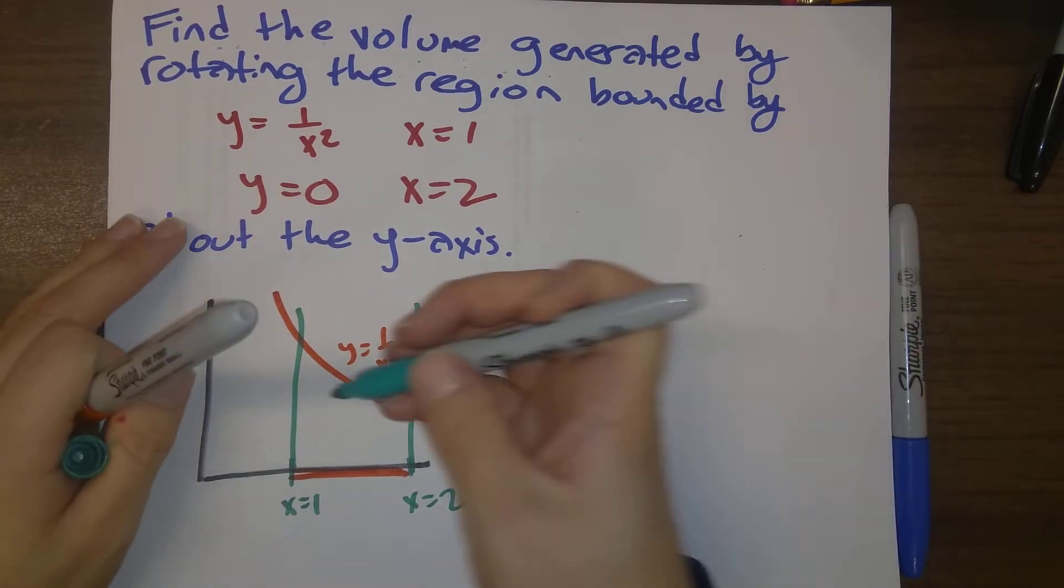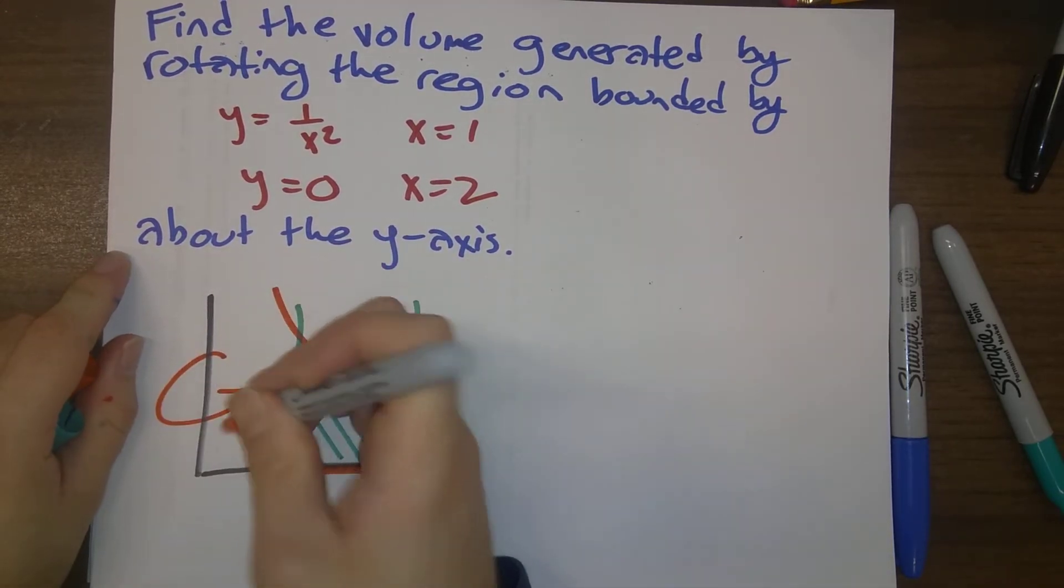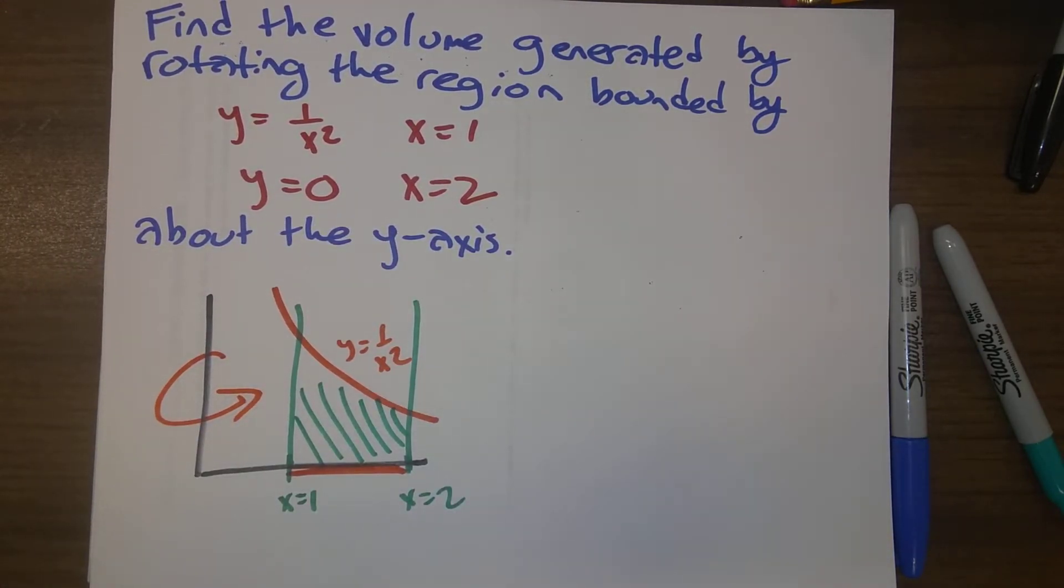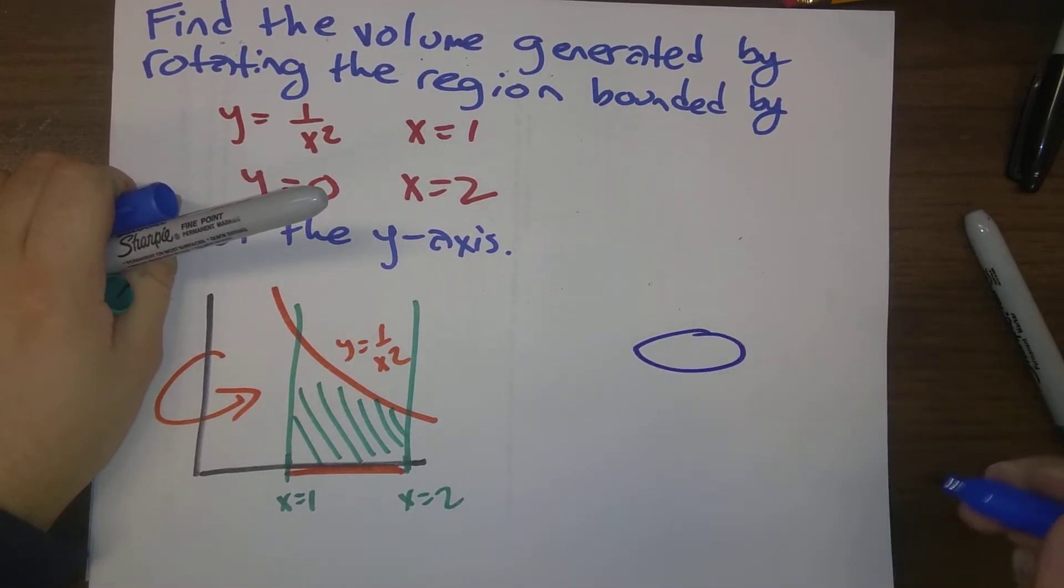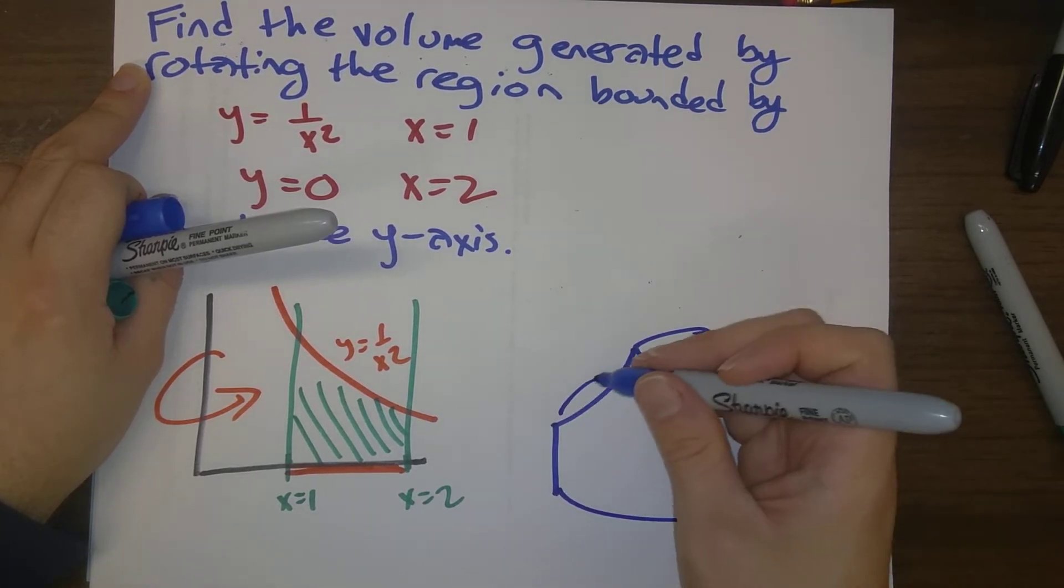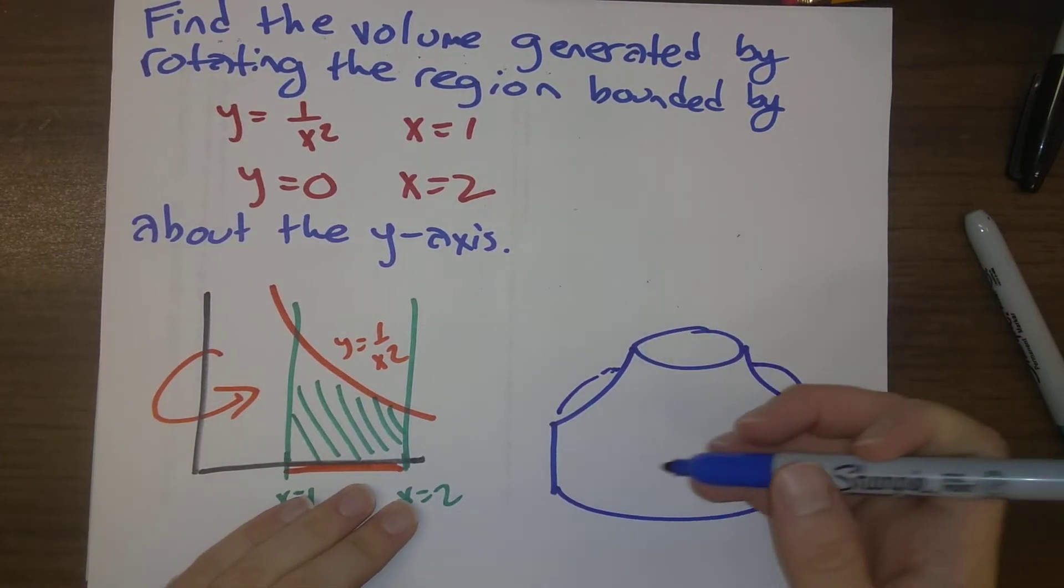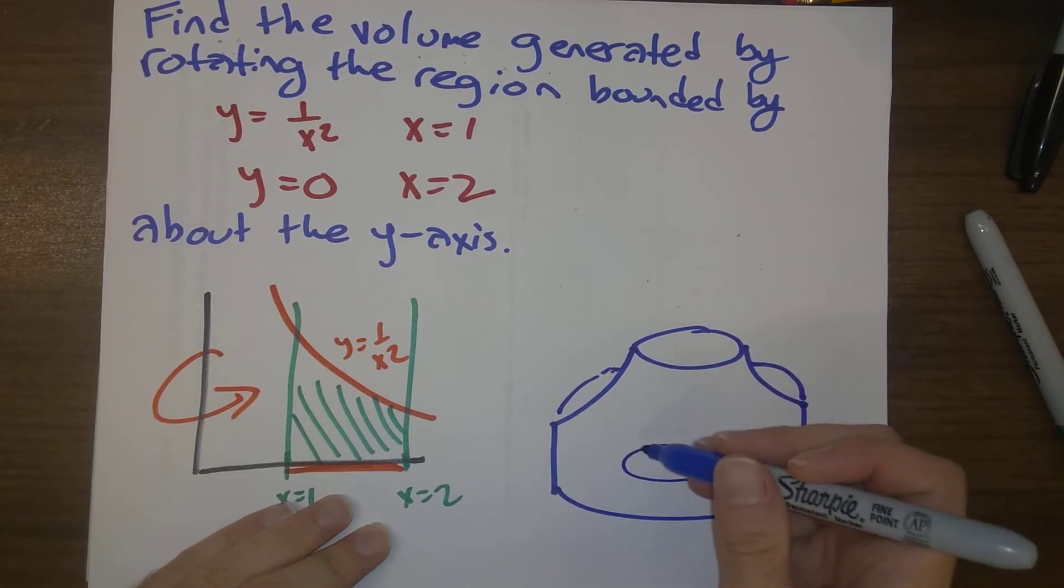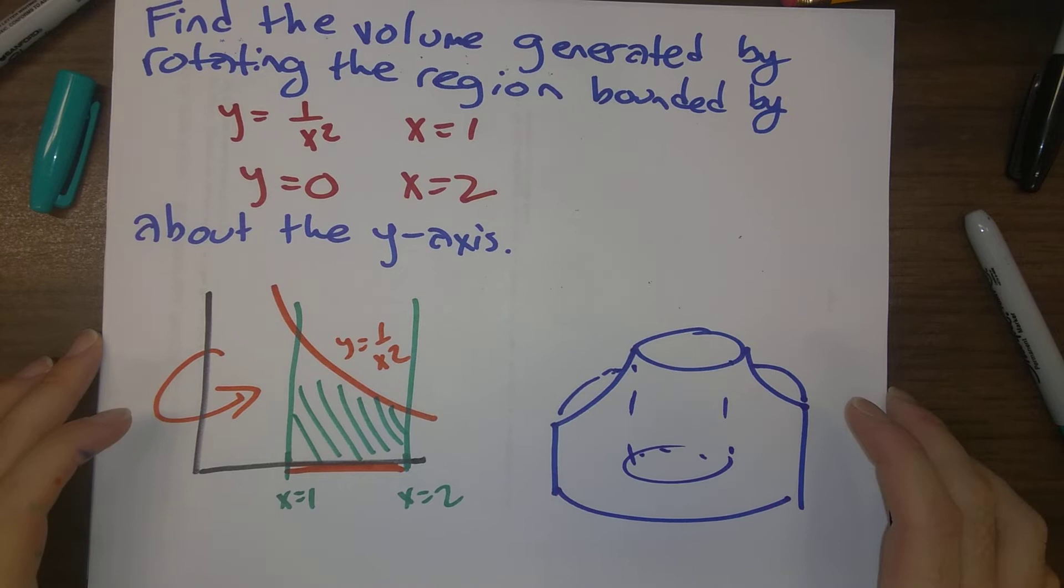And then finally, we have y equals 0. So the region in question, that's the region that we're going to be revolving about the y-axis. So when we actually do that, the picture that we end up with looks something like that. And then there is a hole in the middle of there. So you can't really see that hole, but there is a hole in the middle. So we want to find the volume of this region.